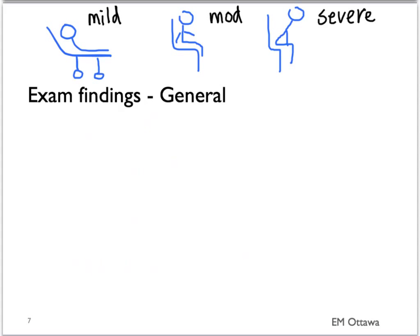In patients with moderate exacerbation, they will now start to sit up. In severe exacerbation, they assume a tripodding position where they use their hand to push against their thighs for support.